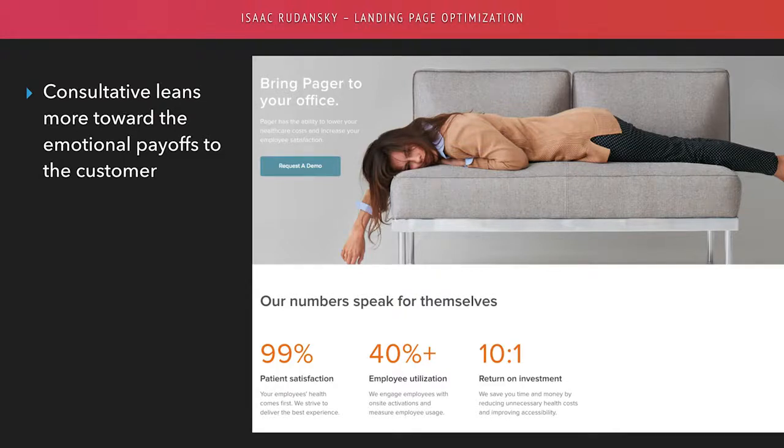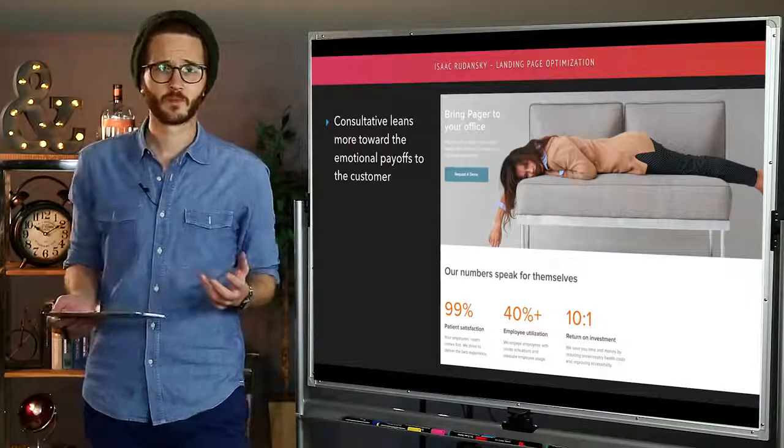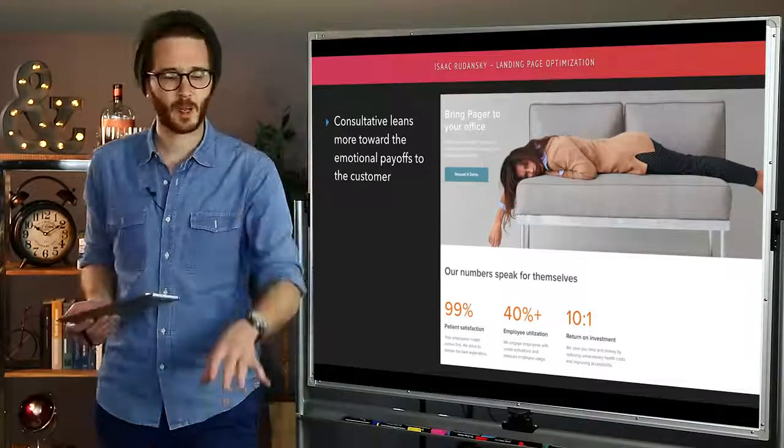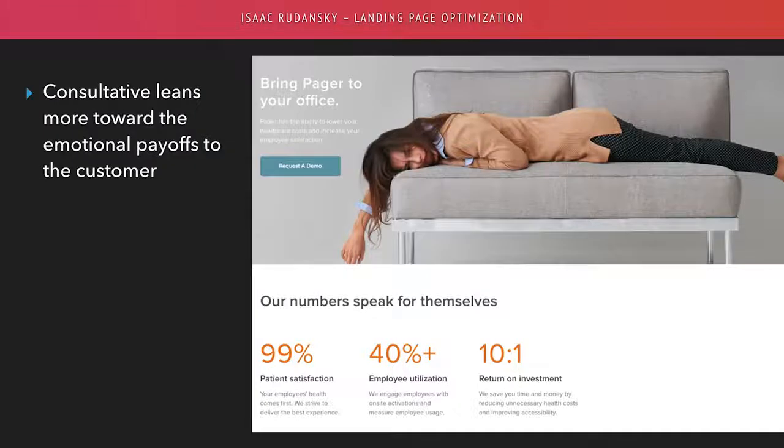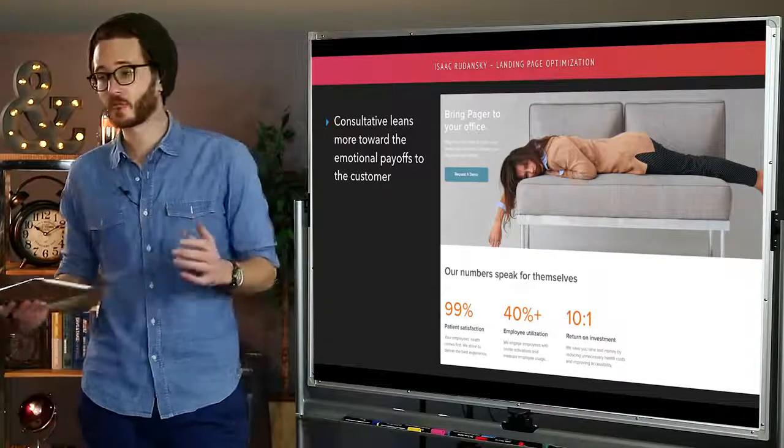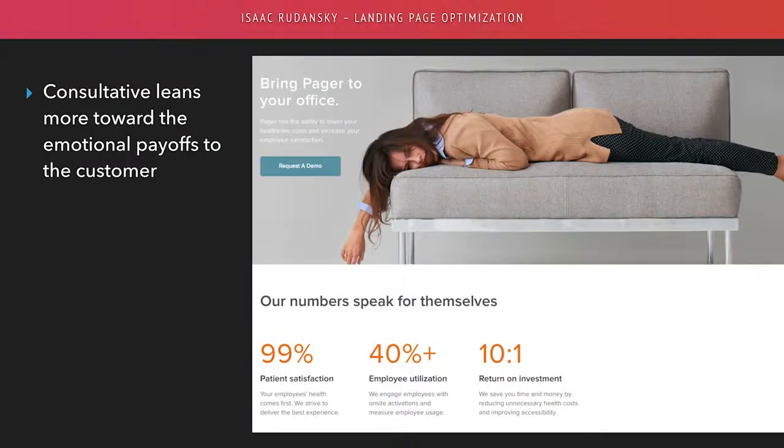99% patient satisfaction, 40% plus employee utilization, 10 to 1 return on investment. These are all payoffs to the user on an emotional, psychological level for engaging with this product. They're not overloading me with details. I don't say anything about price. It's the imagery. So if you're getting, you've all been conditioned to these types of pages because you all use the internet. You should be able to get a sense when you go to these different web pages, how are they marketing themselves? Are they doing it the right way? Are they overloading me with details and product information or service information that's more like a commodity? Or is this something unique consultative and it's a little bit more sophisticated? There's a little bit of mystery around it.